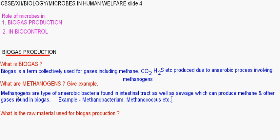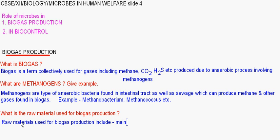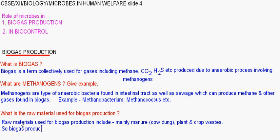What is the raw material used for biogas production? Raw materials used for biogas production include mainly manure or cow dung, and also plant and crop wastes. Biogas production is mainly common in villages and other rural areas.